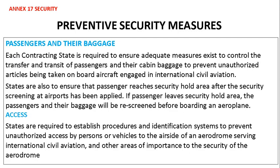Passengers and their baggage: each contracting state is required to ensure adequate measures exist to control the transfer and transit of passengers and their cabin baggage to prevent unauthorized articles being taken on board aircraft engaged in international civil aviation. States are also to ensure that passengers reach the security hold area after security screening at the airport has been applied. If passengers leave the security hold area, they and their baggage will be re-screened before boarding.